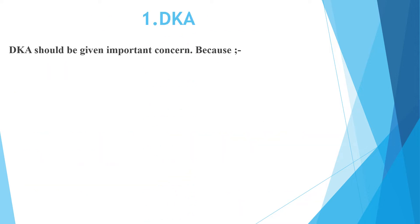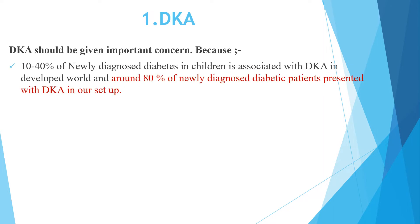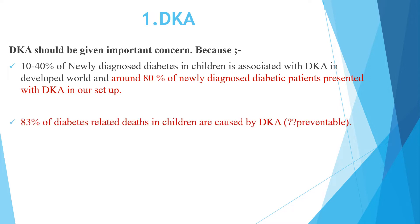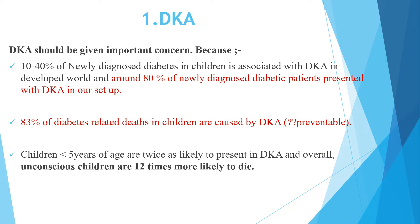Starting from DKA management, DKA should be given important consideration because 10–40% of newly diagnosed DM in children is associated with DKA in developed countries, and around 80% in our setup. About 3% of diabetes-related deaths in children are caused by DKA, which is thought to be preventable. Children under 5 years of age are twice as likely to present in DKA, and unconscious children are 12 times more likely to die.